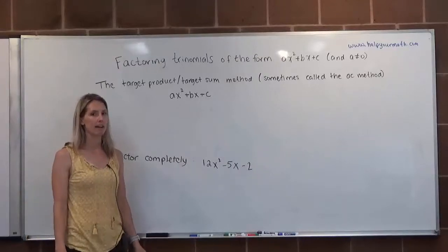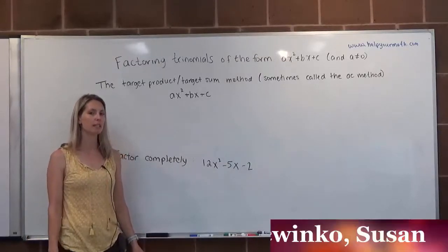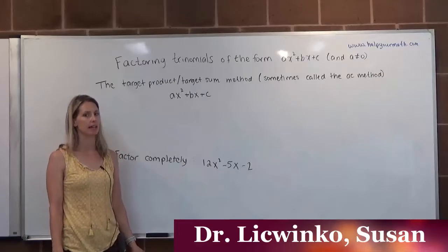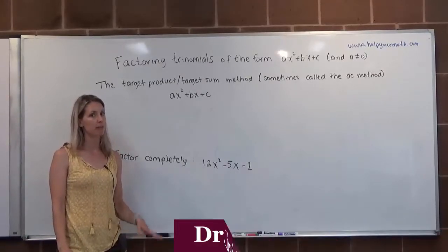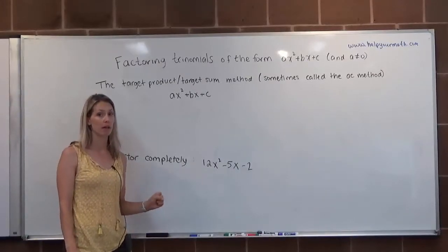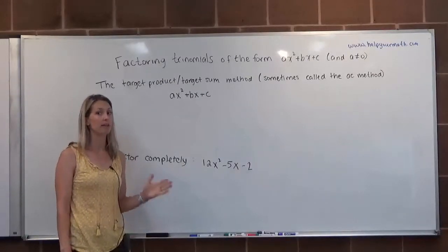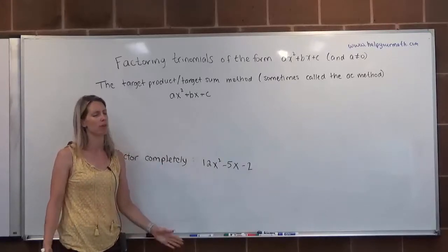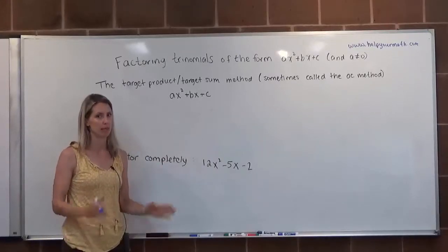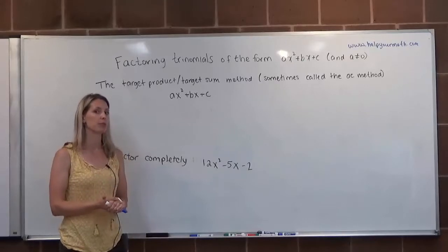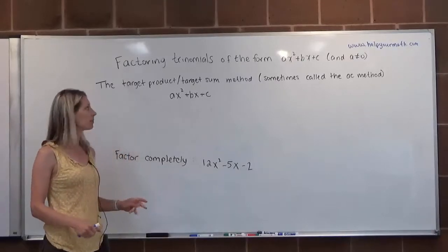In this video, we're going to look at factoring trinomials of the form AX squared plus BX plus C, where A is not equal to zero. We're specifically going to look at what I call the target product target sum method. Some other people call it the AC method, and there are other names for it, but that's the method I'm going to use in these videos and examples.